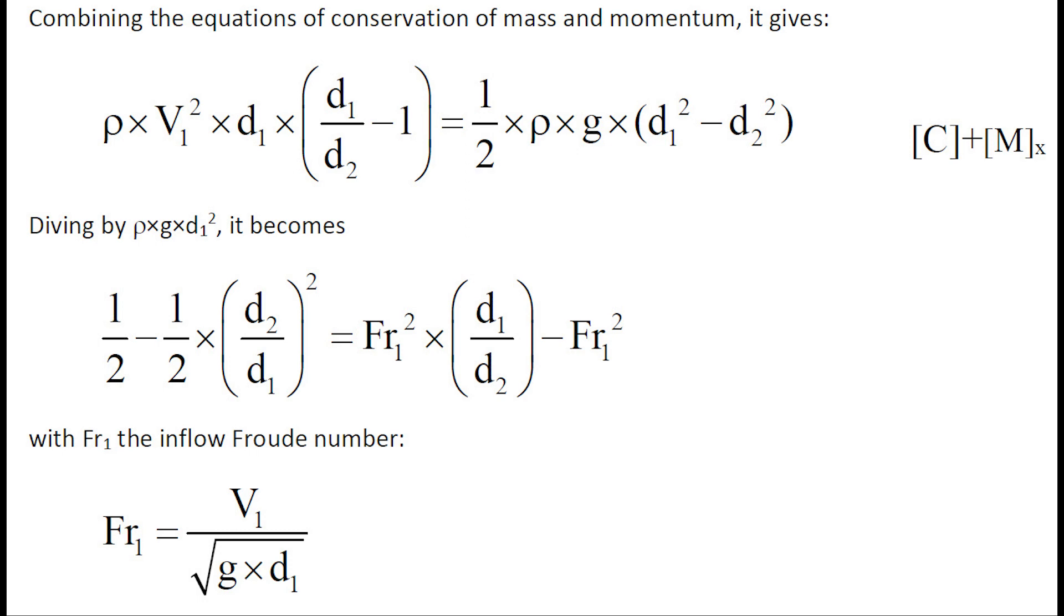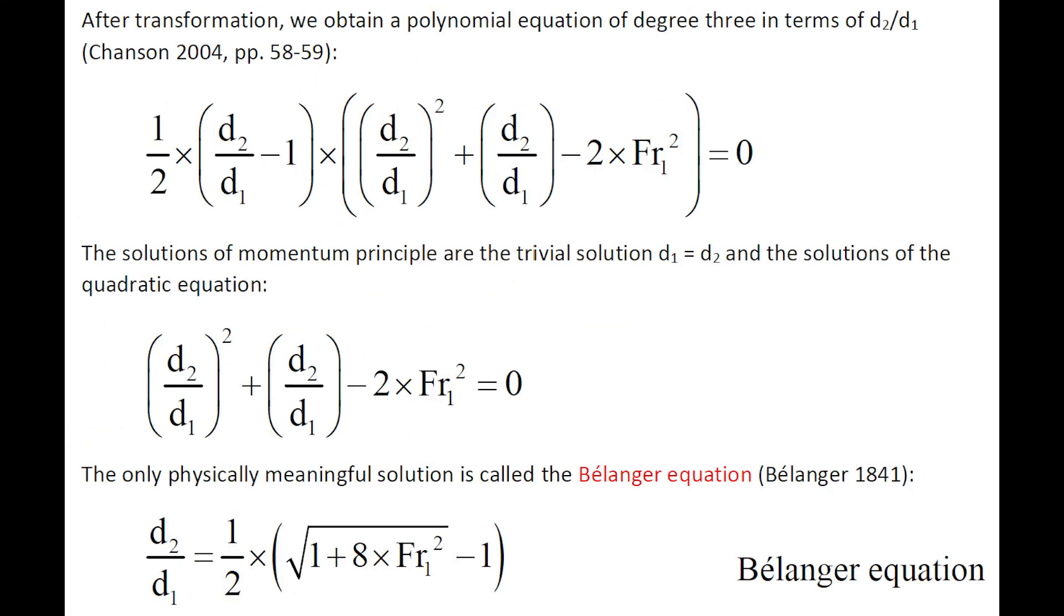Combining the equations of conservation of mass and conservation of momentum, we obtain an expression on introducing the inflow Froude number Fr1. We obtain a polynomial equation of degree 3 in terms of the ratio d2 to d1, where d2 is the downstream depth and d1 is the upstream depth.